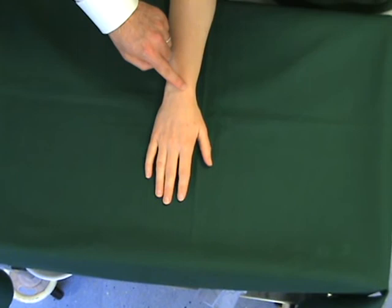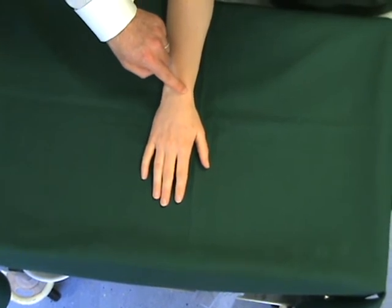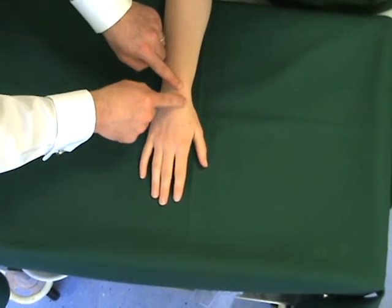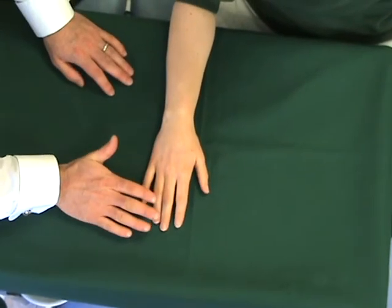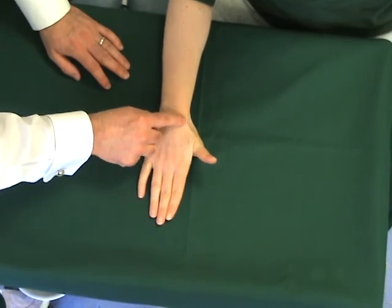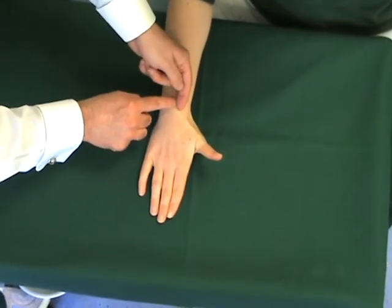Lister's tubercle is a bony prominence right in the center of the wrist around which EPL runs into the forearm. If you ask the patient to retropulse or to pull the thumb up, EPL runs around Lister's tubercle.